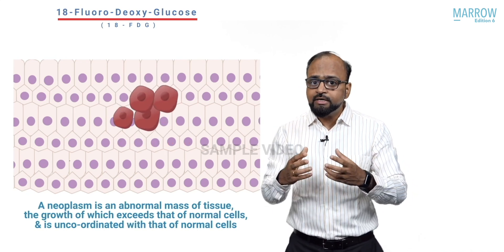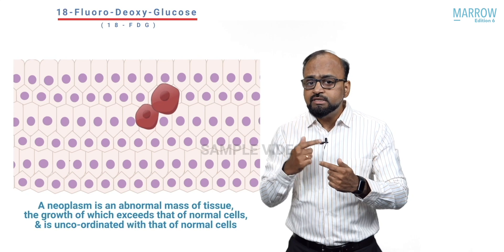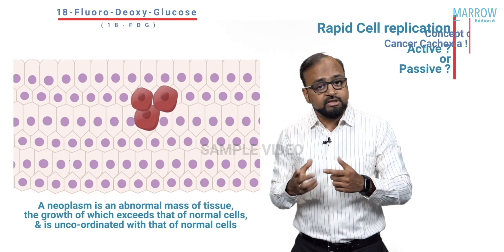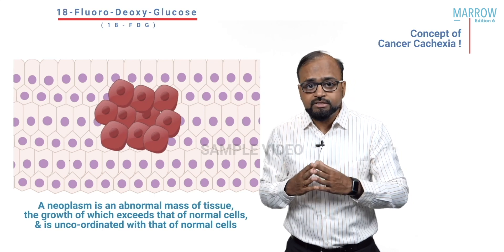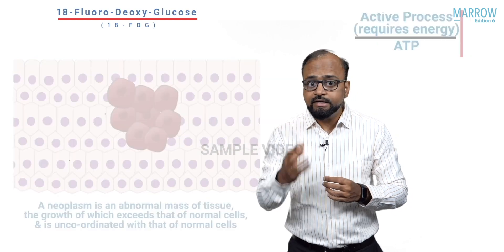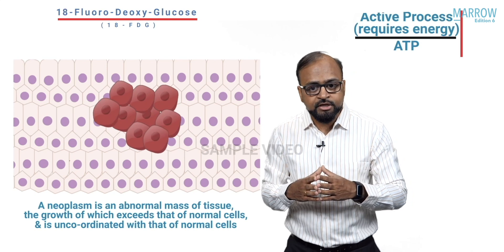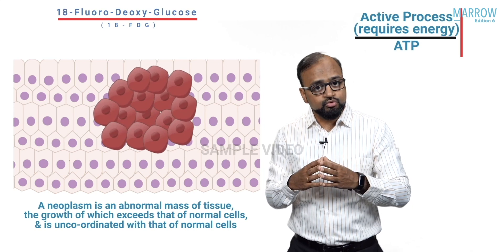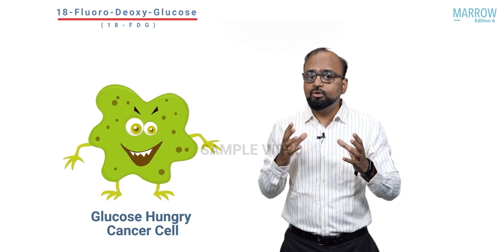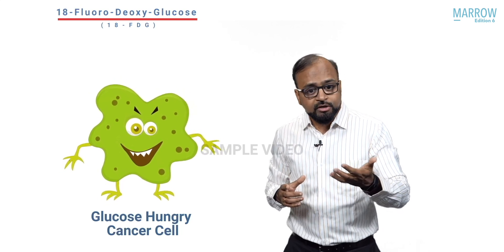Since a cancer cell has to replicate so rapidly, this cell replication is an active process requiring energy. The energy currency of the cell is ATP. So the cancer cell has to generate excess ATP for cell division. This is where the mechanism for the use of FDG lies — a cancer cell is an extremely glucose-hungry cell, and FDG is a radioactive form of glucose.